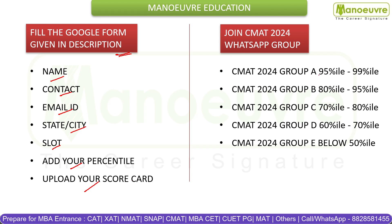Make sure that you all join our WhatsApp groups as well. Students who have scored 95 to 99 percentile will join Group A. Group B is for 80 to 95 percentile students. Students who have scored 70 to 80 percentile can join Group C. Group D is for 60 to 70 percentile. Students who have scored below 50 percentile can join Group E. In these groups, we'll be helping students with the colleges they can apply to, providing information about the admission process and cutoffs.